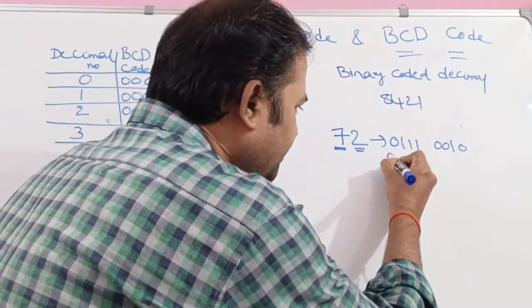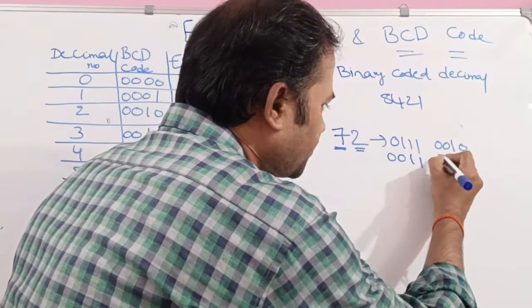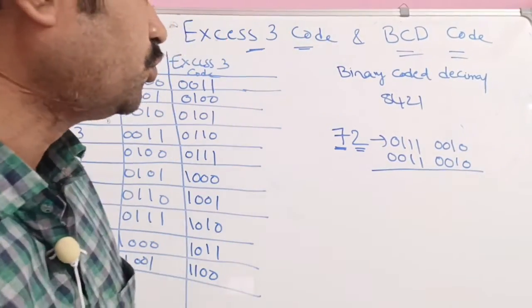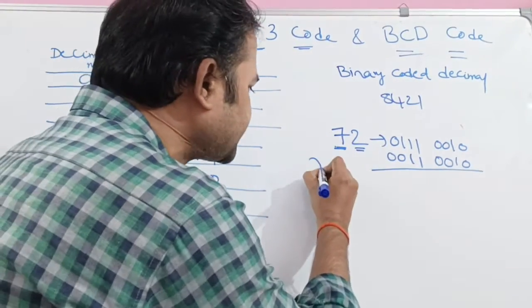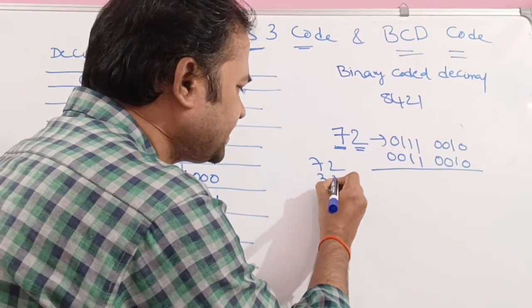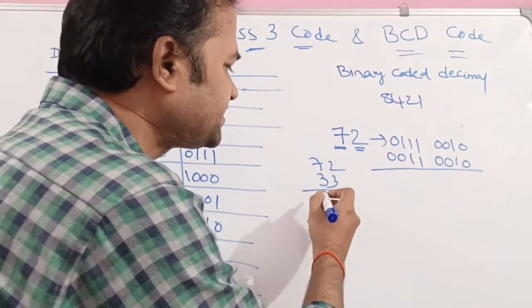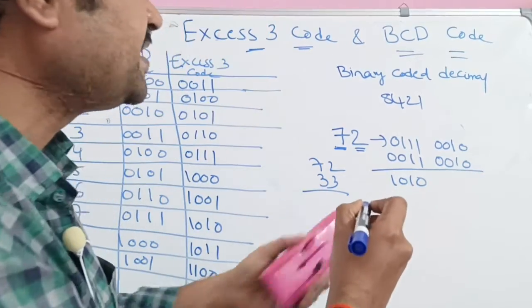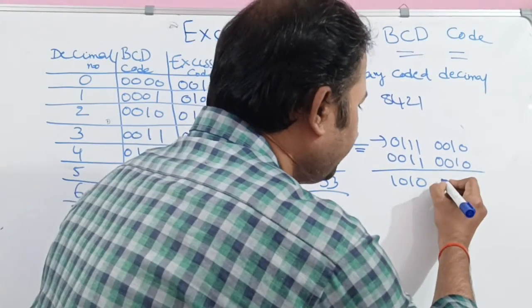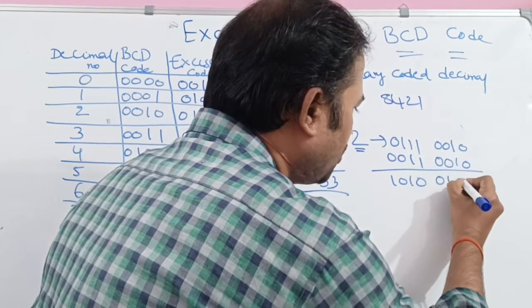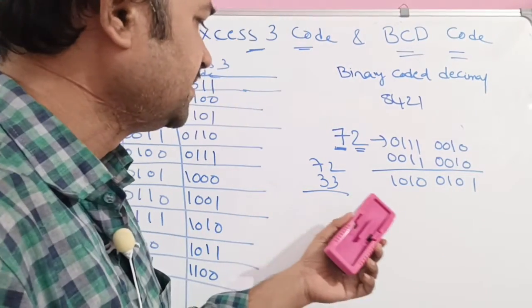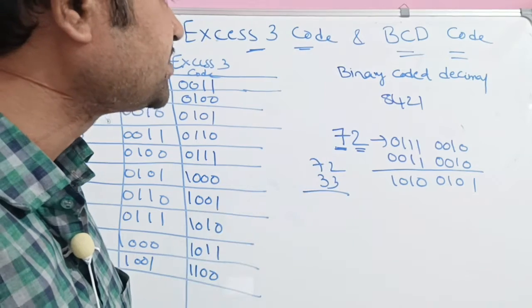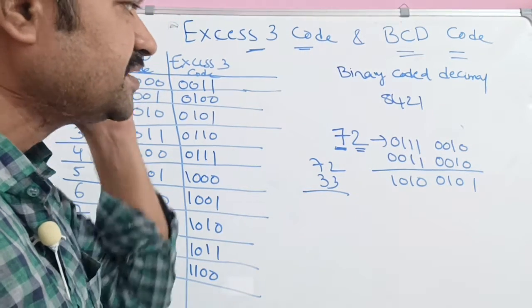For digit 7, we add 3, and for digit 2, we also add 3. So 7 plus 3 is 10, which in binary is 1010. And 2 plus 3 is 5, which in binary is 0101. So the XS3 representation of 72 is 1010 0101.